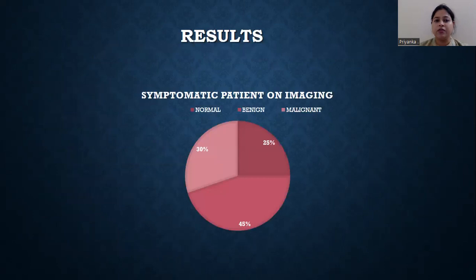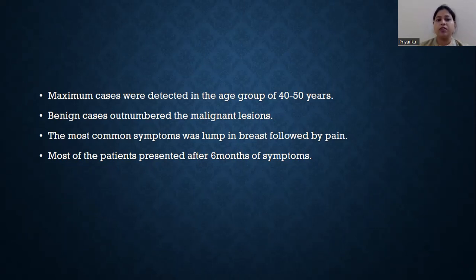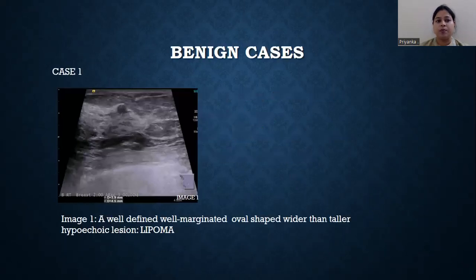The results of the study were: in the symptomatic patients on imaging, 25% of cases were normal, 45% of cases had benign lesions, and 30% of cases had malignant lesions. Maximum cases were detected in the age group of 40 to 50 years. Benign cases outnumbered the malignant lesions. The most common symptom was lump in breast followed by pain, and most patients presented after 6 months of symptom onset.